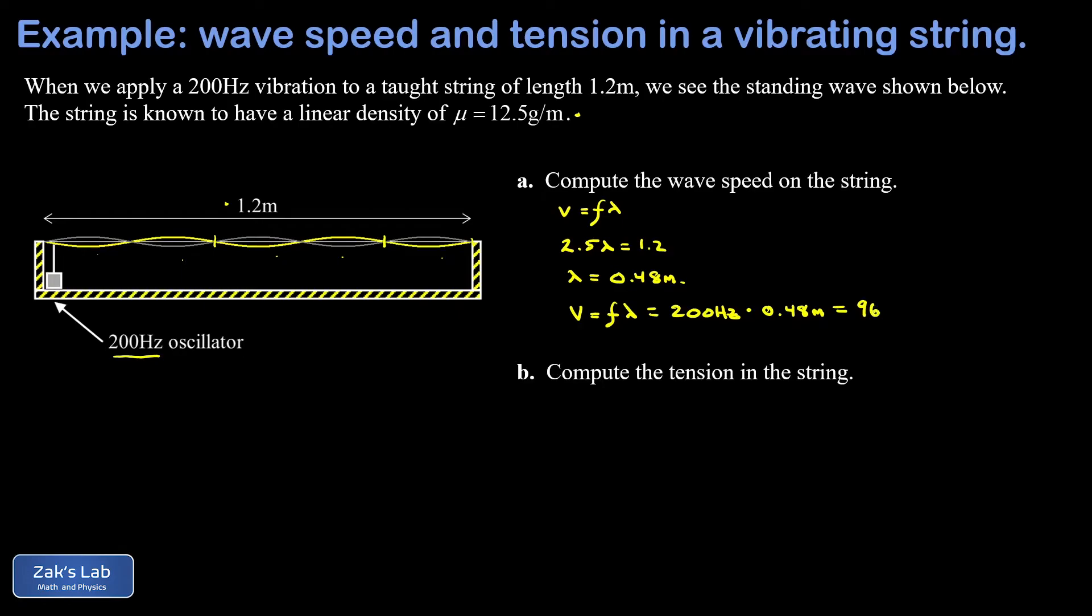Now in part B we're looking for the tension in the string. So we have a formula relating the speed in the string to the tension and the linear density, and I'll post a link to the video where this was first introduced. That's v equals square root of T over mu.